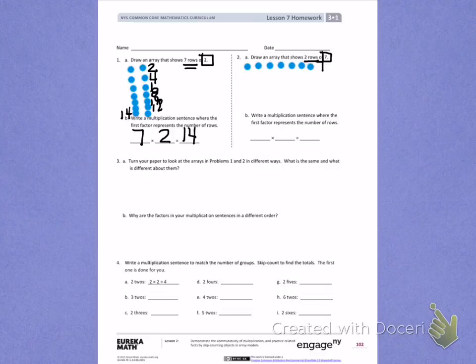Now another row of 7 because I need 2 rows. 1, 2, 3, 4, 5, 6, 7. When I count those continuing from 7, I have 14.